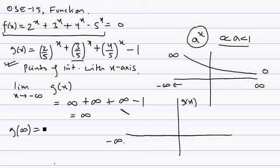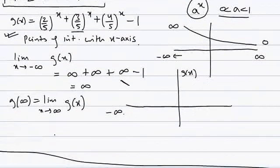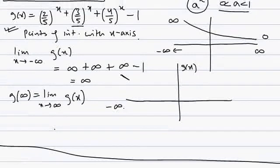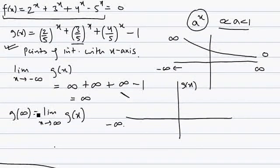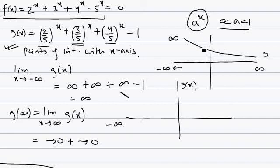Now let's look at the behavior of g(x) as x approaches +∞. Each term (2/5)^x, (3/5)^x, and (4/5)^x approaches 0 as x → +∞. So the sum of those terms approaches 0, and then we subtract 1, meaning the entire expression approaches -1.